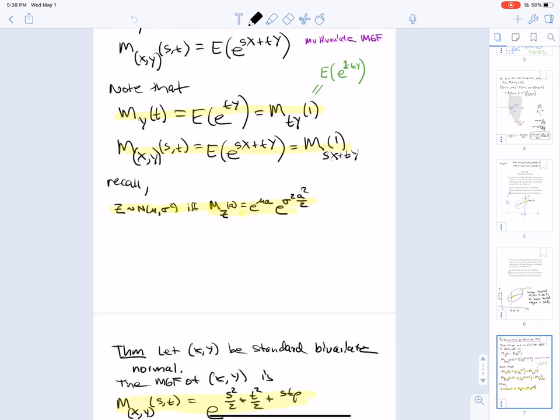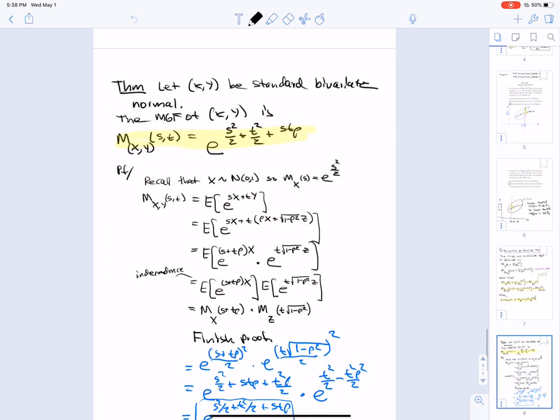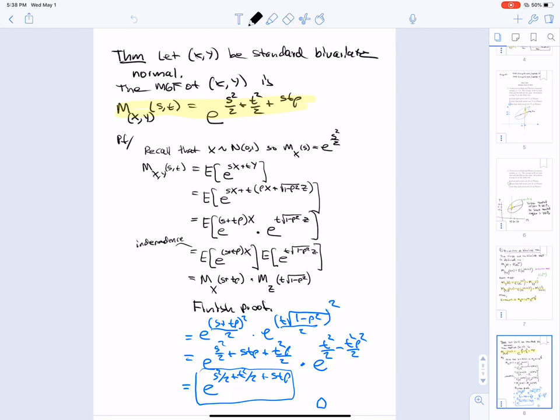So let xy be standard bivariate normal. The MGF of xy is e to the s squared over 2 plus t squared over 2 plus st rho. So let's prove that. So recall that x is standard normal. So the MGF of x is e to the s squared over 2.